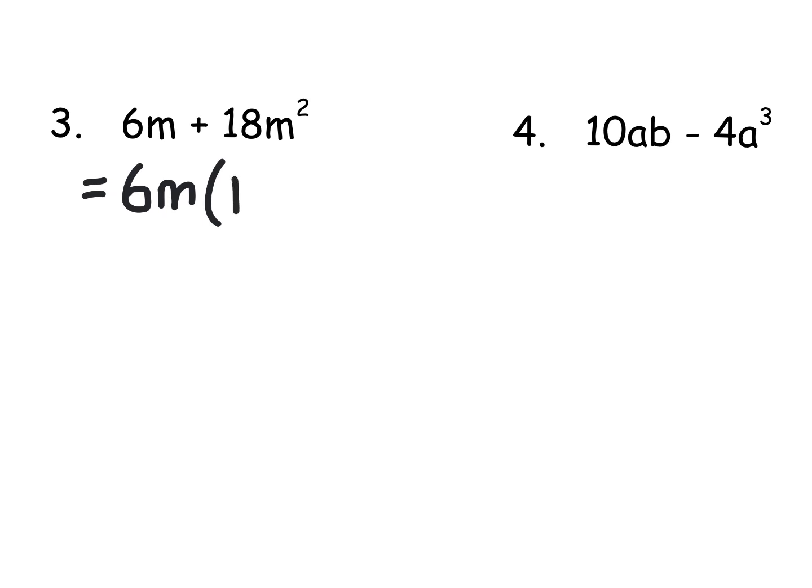You could do it a bit at a time and go 6 divided by 6 is 1. M divided by M is 1. Either way, the first term becomes 1. And then in the second term, 18 divided by 6 is 3. M squared, remember that stood for MM. We're cancelling out a little M. So we're left with 3M. Remember, quick check. We'll always see if you've got that right.